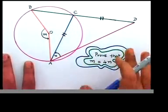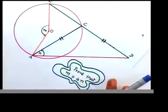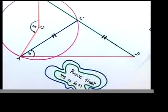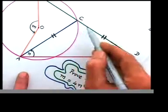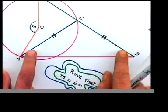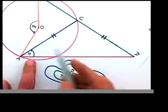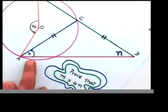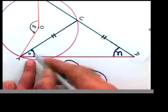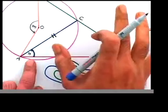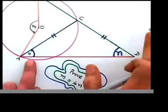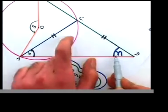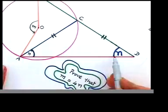Let's concentrate on the isosceles triangle. Two sides are equal — those two angles are therefore equal. This angle is given as n in the question. By the rule that base angles of an isosceles triangle are equal, this angle is also n. We're not concerned with the third angle — just that both base angles are n.